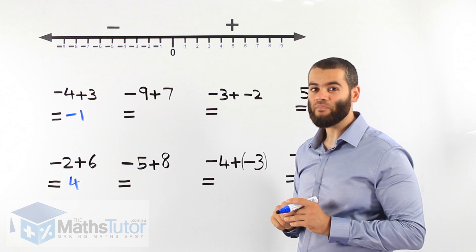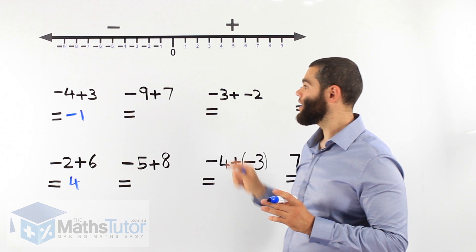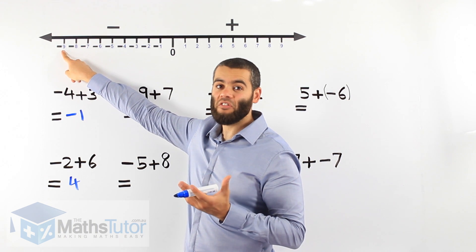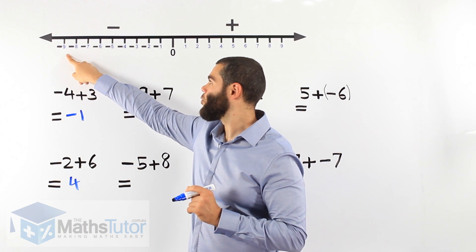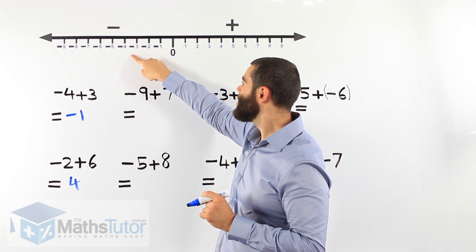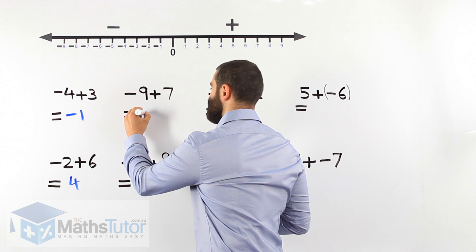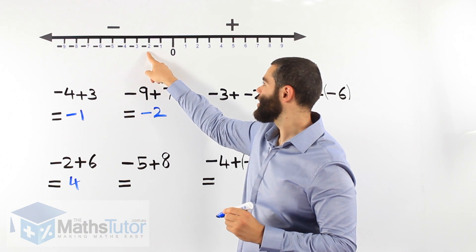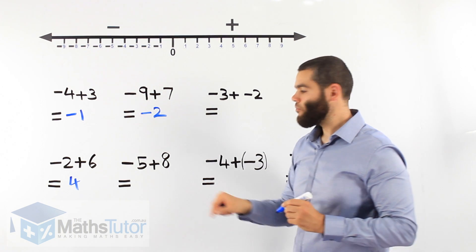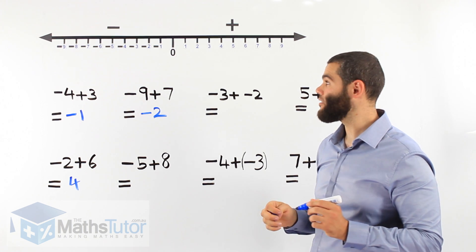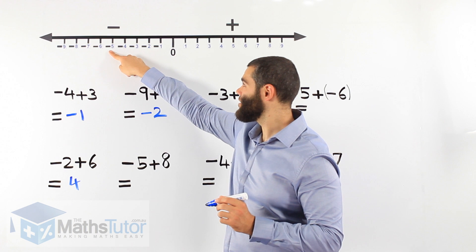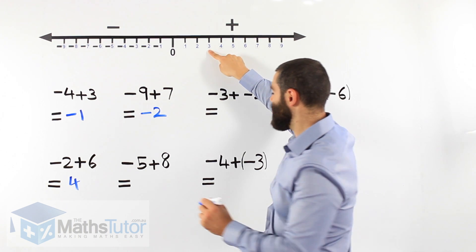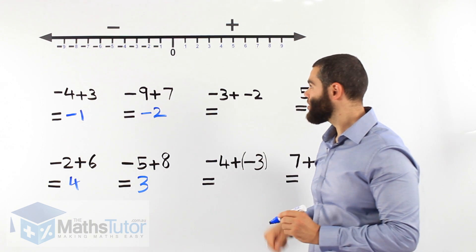Let's do negative 9 plus 7. We start at negative 9, we're adding so we go to the right: 1, 2, 3, 4, 5, 6, 7. Our answer is negative 2. Then minus 5 plus 8 — we start at negative 5 and add 8: 1, 2, 3, 4, 5, 6, 7, 8. We are on positive 3. That's our answer.